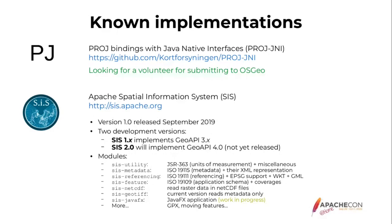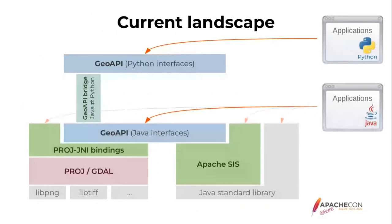The current landscape is shown in this presentation. A Java developer has the choice between PROJ using Java Native Interface or Apache SIS. GeoAPI provides an abstract level that allows developers to use PROJ or Apache SIS without needing to know exactly which one they are using — they can switch implementations without changing their code. It is also possible to use Apache SIS or PROJ directly, but in that case they lose implementation neutrality.